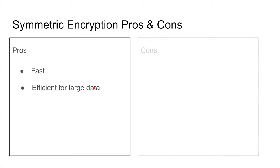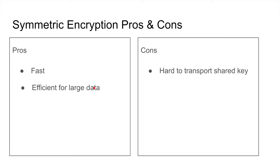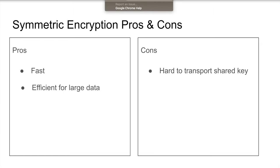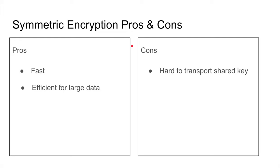The con of symmetric encryption is that it's very hard to transport the shared key to the other party in order to start communication. The moment you share it, people can sniff it. That said, this doesn't prevent us from using symmetric encryption in networking — and we'll talk about how we solve that.